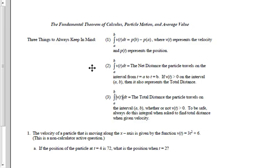Number three: the integral of the absolute value of v(t) dt from a to b is the total distance that the particle travels on the interval. It doesn't matter if velocity is positive, and to be safe, always do this integral when asked to find the total distance when given velocity.